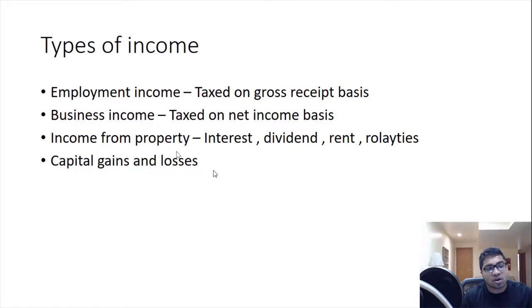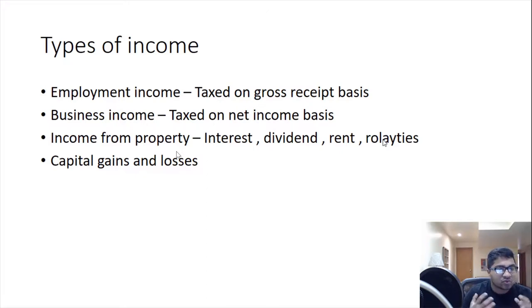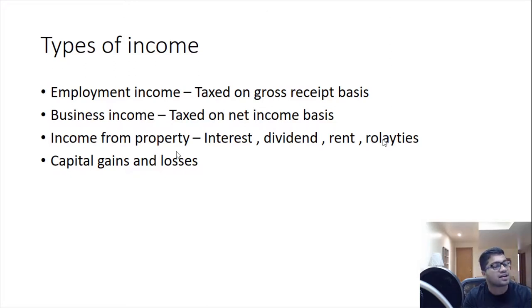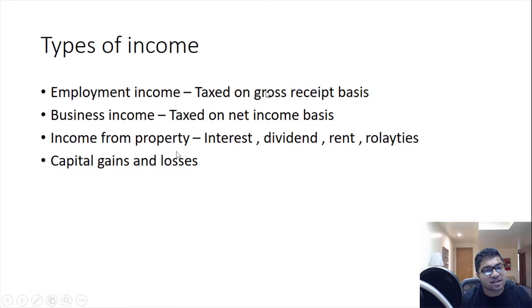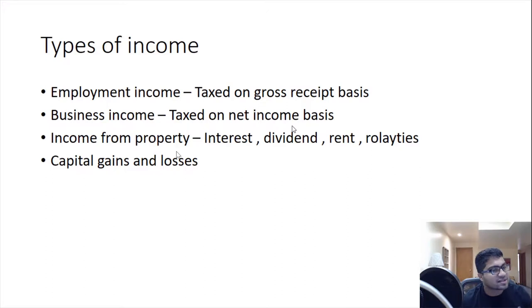Business income is different — it is taxed on a net basis. You have earnings from business, deduct all expenses incurred running that business, and pay tax only on the profit. Employment income is generated when you work for someone else; business income is when you are self-employed or running a business. Business income allows various expense deductions, whereas employment income does not, except for a few allowed deductions.